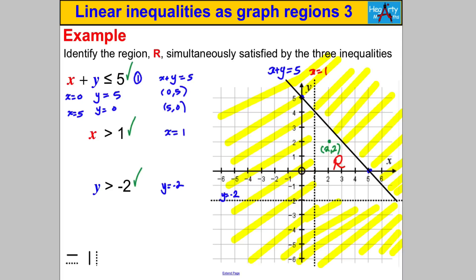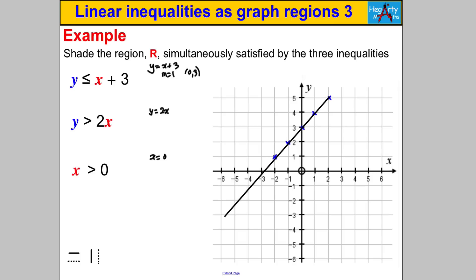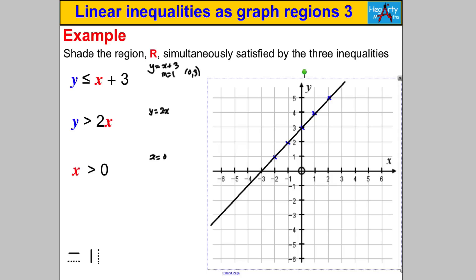Let's try another example — pause the video and try it yourself. Step one: draw the required lines. We'll draw y = x + 3, y = 2x, and x = 0, then decide on filled or dotted lines and handle the regions. The line y = x + 3 has a gradient of 1 and y-intercept of 3, so start at (0, 3) and go right one, up one repeatedly — and left one, down one — to build the line.